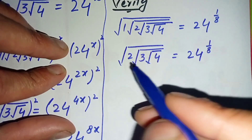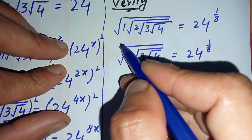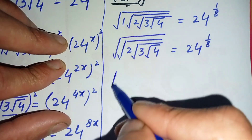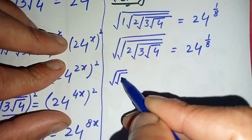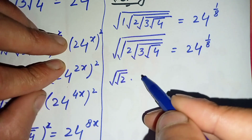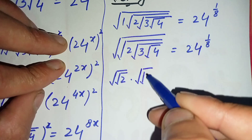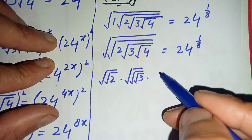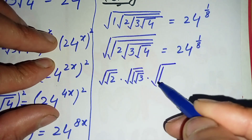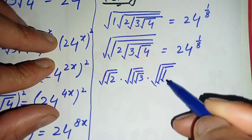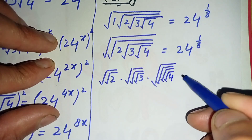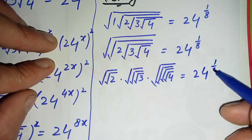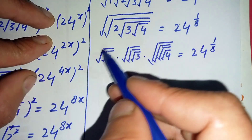We can write the left-hand side as square root of 2, times square root of square root of 3, times square root of 4 (where square root of 4 equals 2). This equals 24 raised to power 1/8.